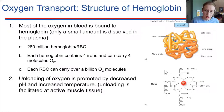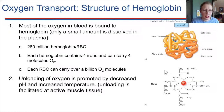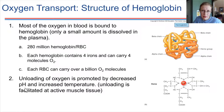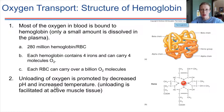Ordinarily, if oxygen is being carried by a normal healthy red blood cell, what would facilitate that red blood cell to release the oxygen is two key things: decreases in pH and/or increases in temperature. Either one will drive the red blood cell to give up its oxygen.